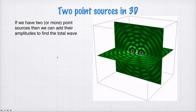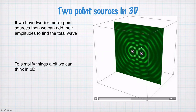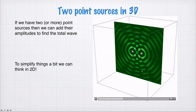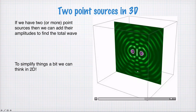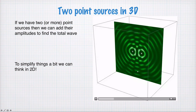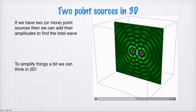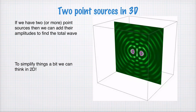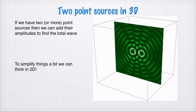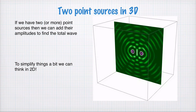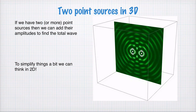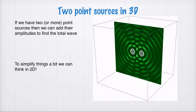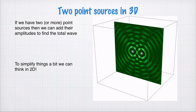We can make things look a little simpler by just taking a plane — a single plane through this problem — and thinking about things only in two dimensions. We're taking a single plane through this three-dimensional problem and looking at the interference in a two-dimensional space, kind of like interference of water waves on the surface of water, although we can imagine this is in three-dimensional space as well.